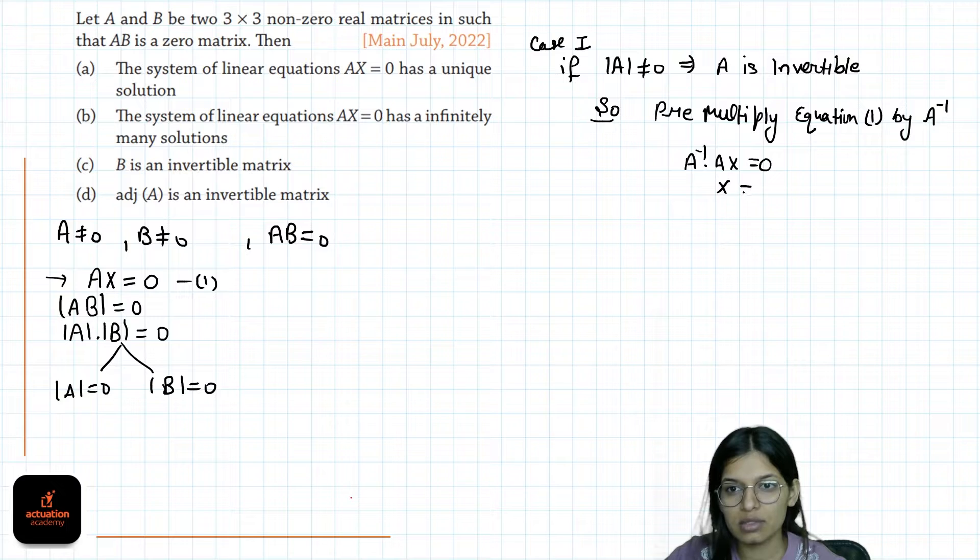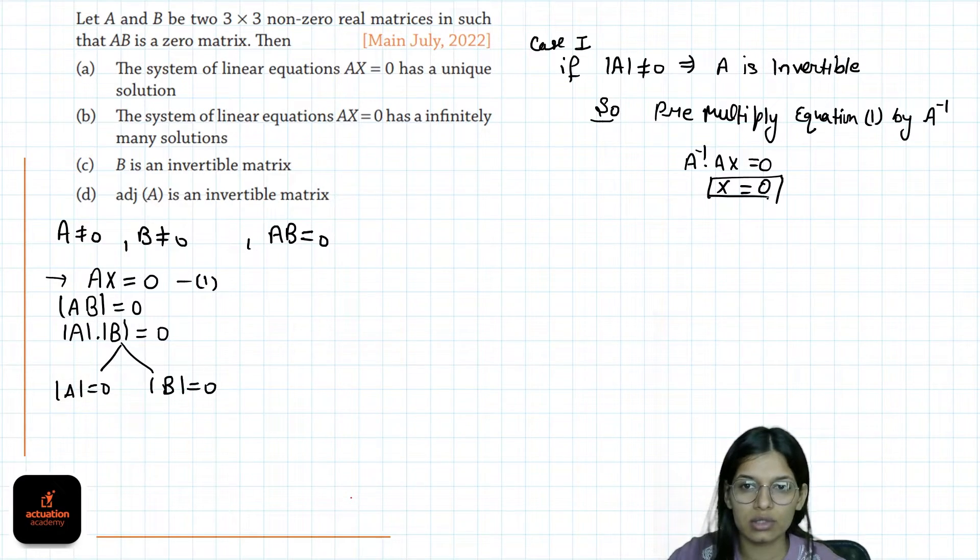This implies X equals 0, a null matrix. But X can't be 0. AB will be 0, so B will be 0. Not possible.